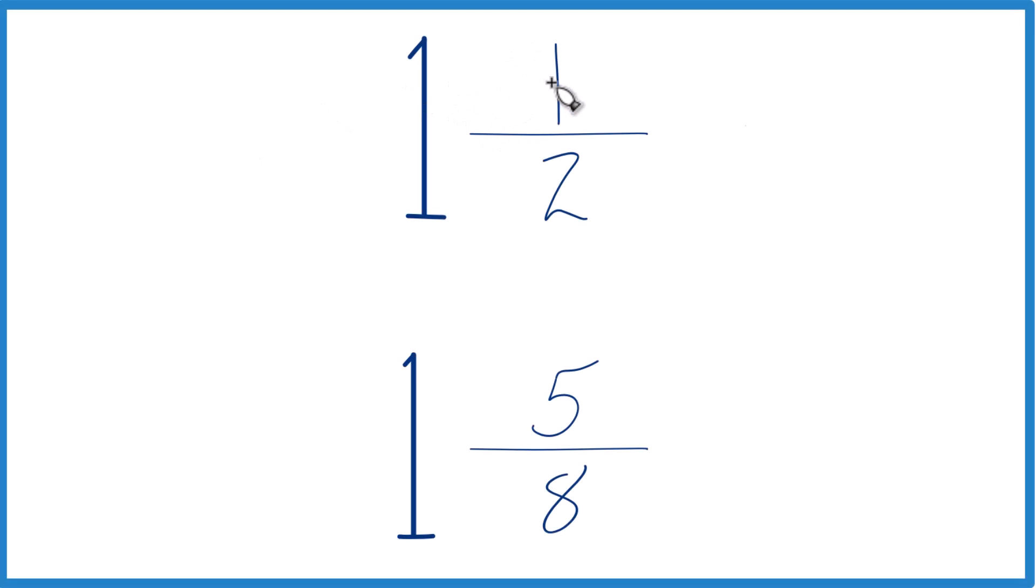So let's figure out which of these fractions are greater. We have 1 and 1 half, and then we have 1 and 5 eighths. So how do you tell which fraction's larger?